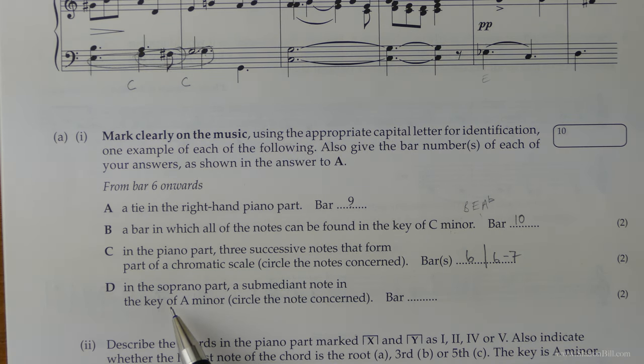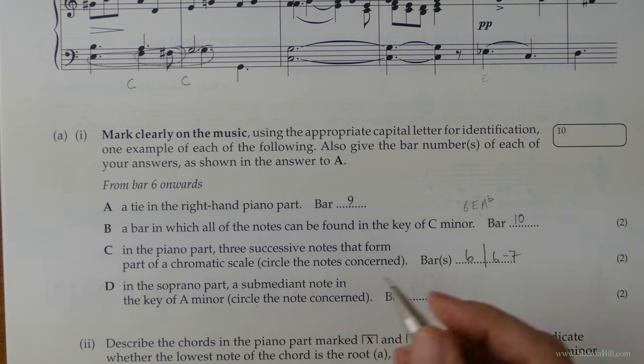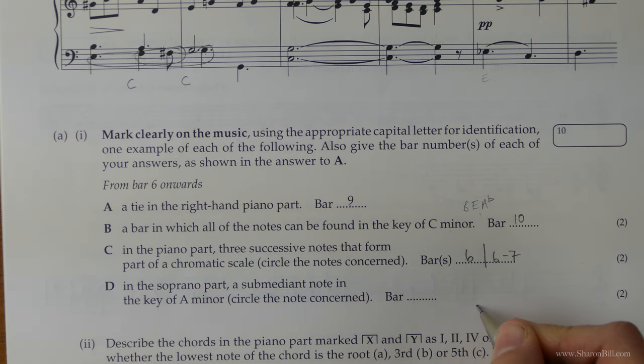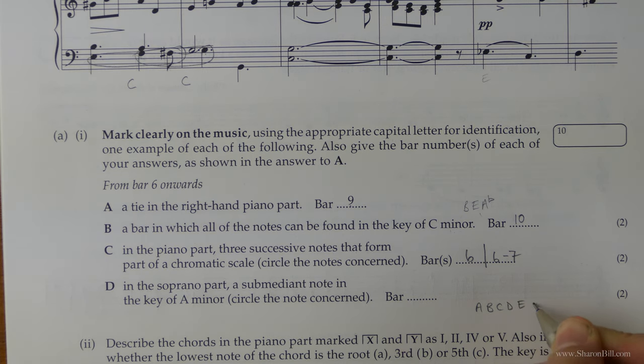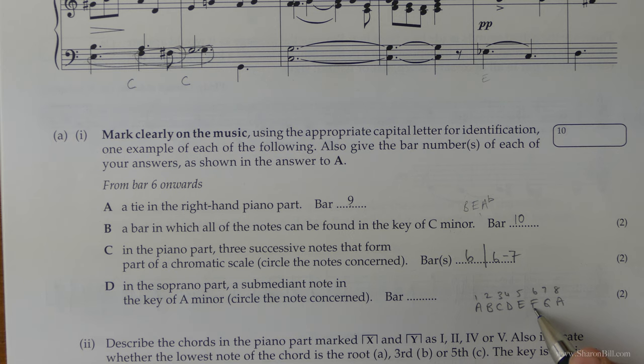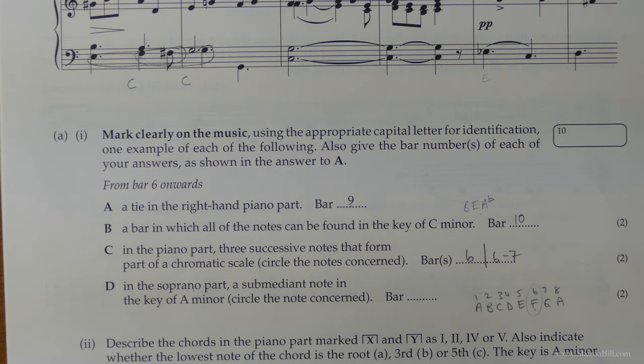Now then, in the soprano part, we're looking for the submediant note in the key of A minor. So first of all, let's figure out what we're actually looking for. So in A minor, I'm just going to sketch out the degrees of the scale. So there's an octave. 1, 2, 3, 4, 5, 6, 7, 8. The submediant is note F. So we're looking for a note F in the soprano part.